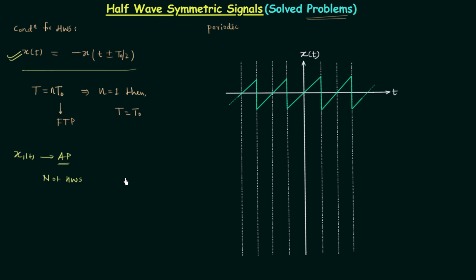The use of half wave symmetric signals will be seen in the Fourier series. Now we move to the first problem. Signal x1(t) is given here with its waveform. There is a particular structure repeated in this waveform, and the signal is periodic from minus infinity to infinity. This structure is repeated after each fundamental time period T₀, and the dots indicate the signal exists from minus infinity to infinity, so this is a periodic signal.